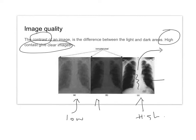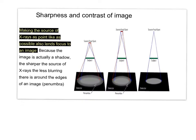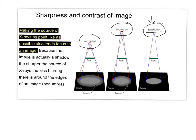Now we're going to look at how to increase sharpness. Increasing sharpness is all about the source of the x-ray. As you can see from these images, the smaller the point of emission of the x-rays — the source focal spot — the greater the sharpness will be. Because what we're trying to avoid is this area of shadow. These shadows are caused when you have a focal spot which is wide.